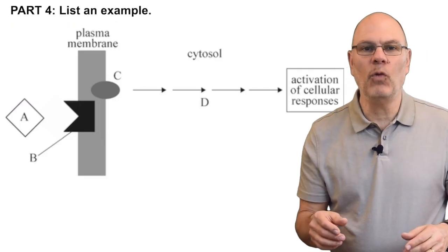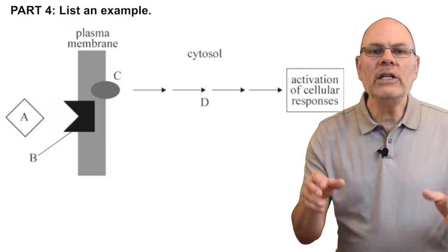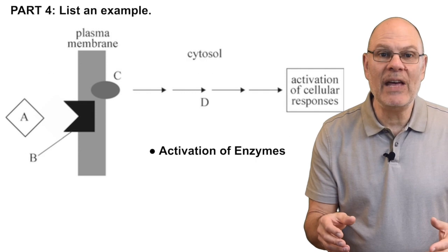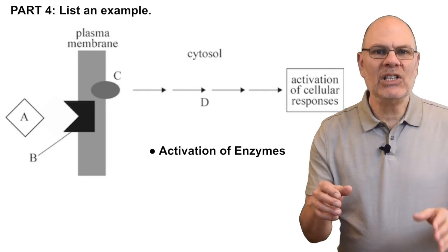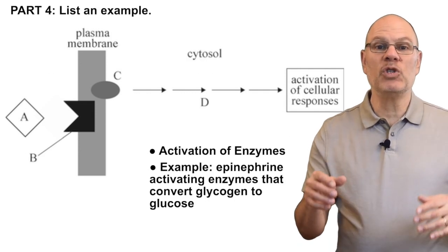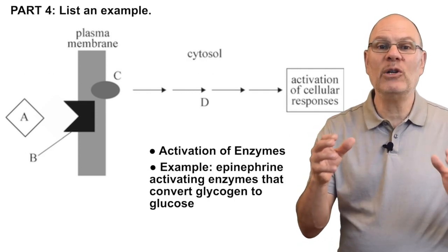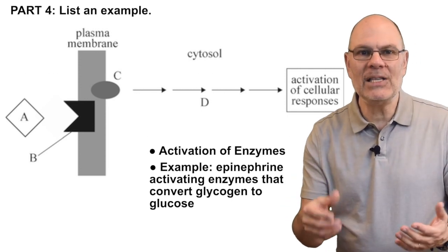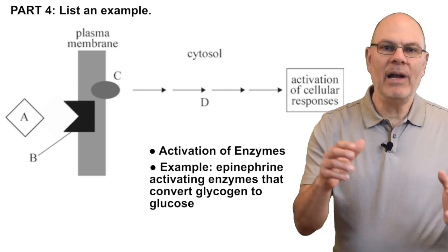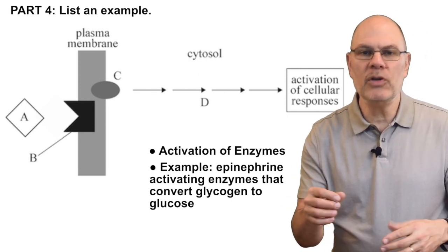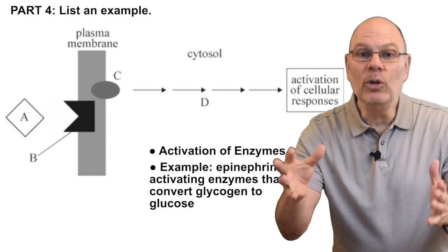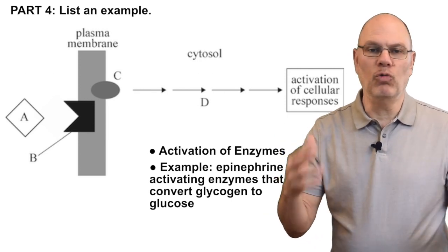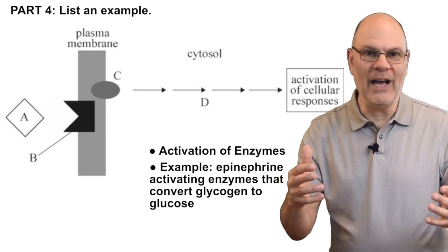Now let's look at part four. One possible cellular response is activation of enzymes. An example of this is when liver cells respond to the fight-or-flight hormone epinephrine by activating enzymes that break down glycogen into glucose. Then that glucose diffuses into the bloodstream and you can use it to run or fight.